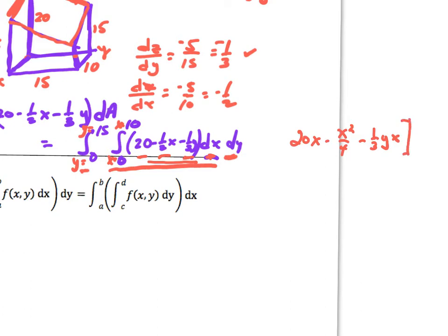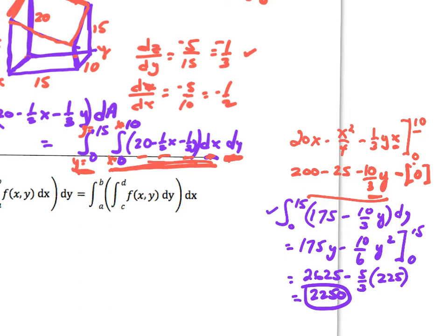Plugging in x = 0 to 10, we get an expression with a (10/3)y term remaining. We take those limits and put this expression inside the outer integral with respect to y. Working that out gives us 2250. That's how you calculate the double integral — start with the inside and work with respect to whichever variable you're integrating.